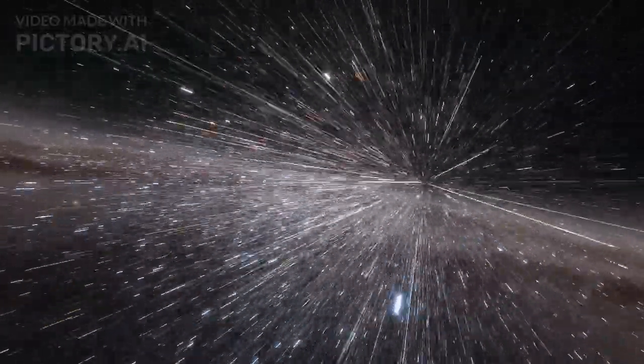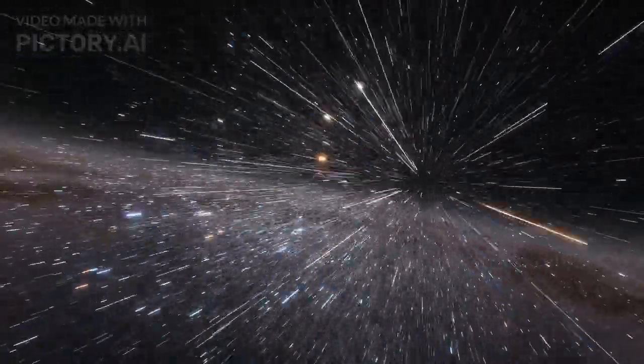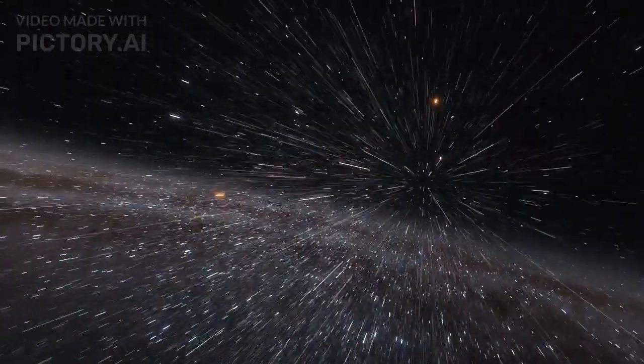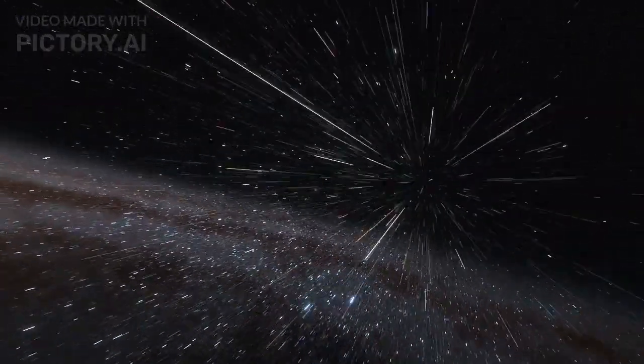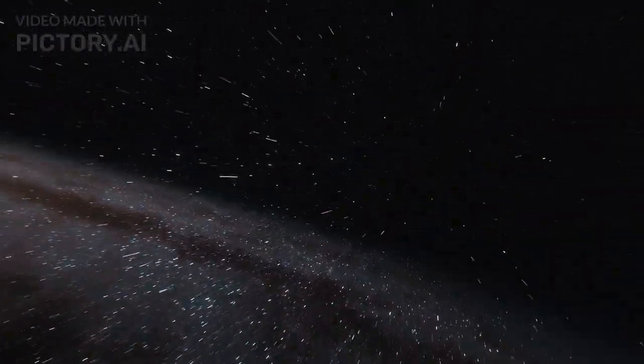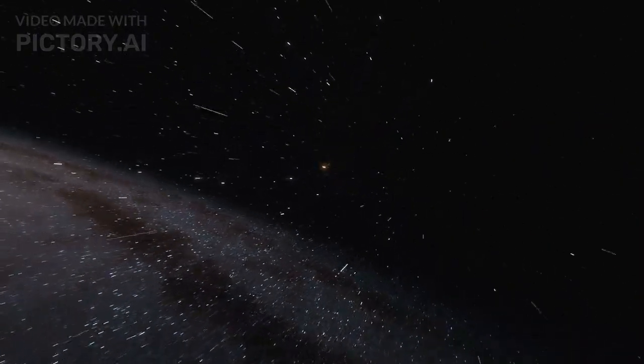With an apparent magnitude of 3.4, the Andromeda Galaxy is among the brightest of the Messier objects and is visible to the naked eye from Earth on moonless nights, even when viewed from areas with moderate light pollution.